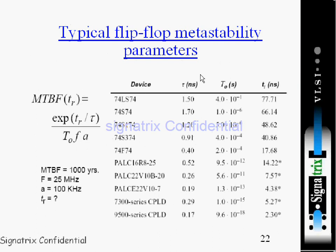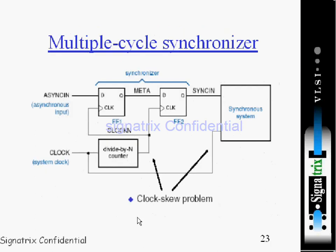Coming to the metastability parameters, we can have a look at the number of devices and their particular nanosecond values of Tau and T-naught. This is an explanation of MTBF for these devices. For example, when we take the MTBF for a thousand years — F is the frequency at 25 megahertz and A is the input — we have to calculate this resolution time.